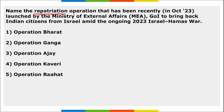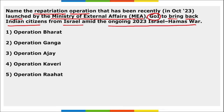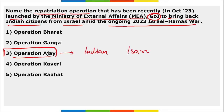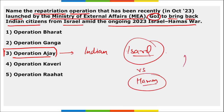Operation Ajay was launched by the Ministry of External Affairs to bring back Indian citizens from Israel amid the ongoing 2023 Israel-Hamas war. Israel carried out bombing in the Gaza Strip.